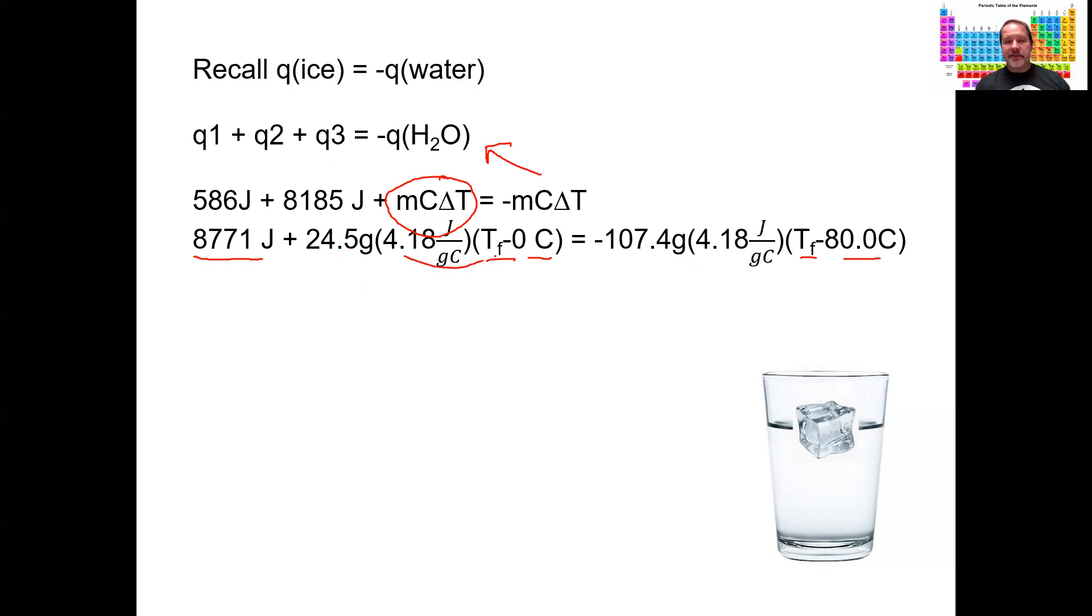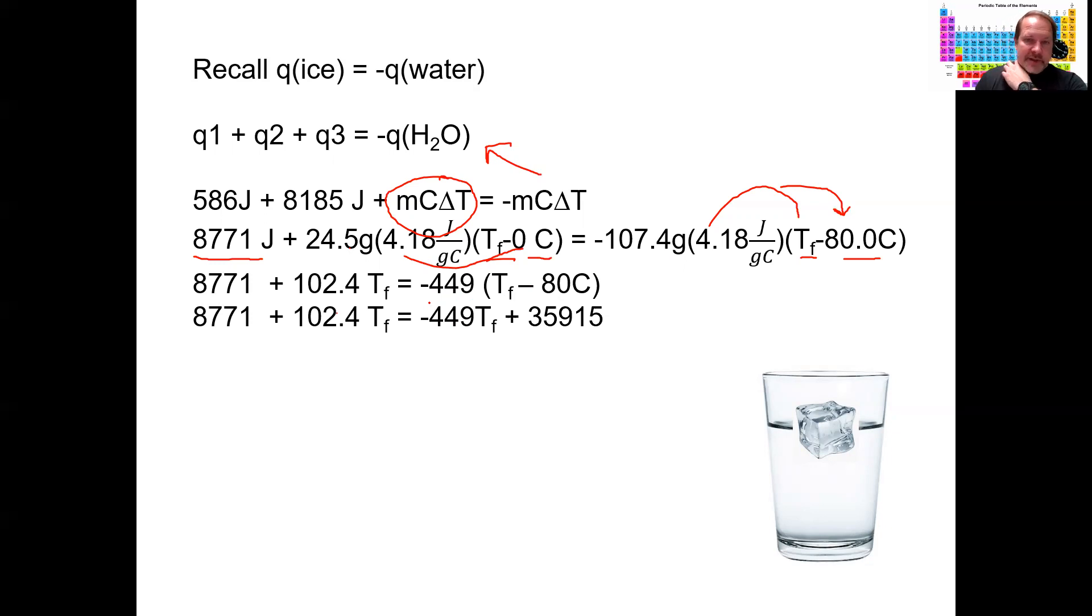So I really just have one term from the distribution on that side. I also multiply numbers, distribute to the T_f. And then I'm going to have to distribute that to the 80. 107.4 times 4.18 is negative 449. And that's - I'm loose with my units right now so we can focus on the numbers. We're going to end up with the temperature in Celsius.